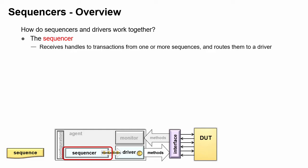Most of the time a sequencer is fed by a single sequence. You can have a single sequencer fed by multiple sequences. This sequencer has to arbitrate between them, as shown in a later lesson.